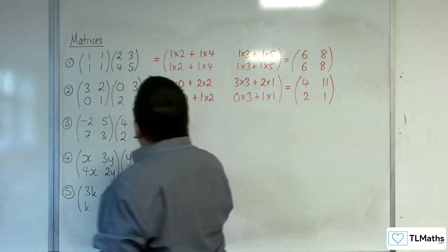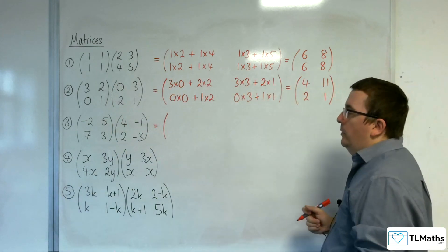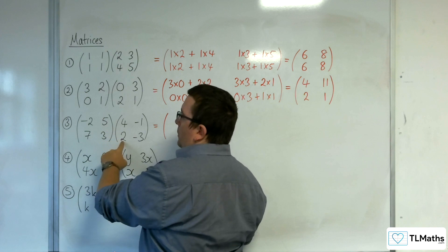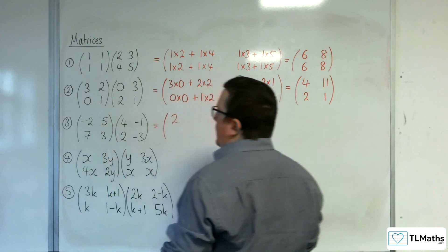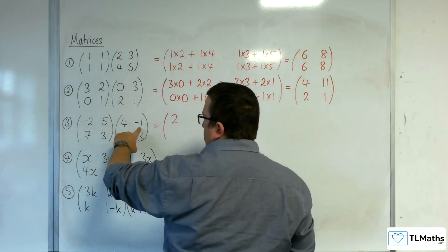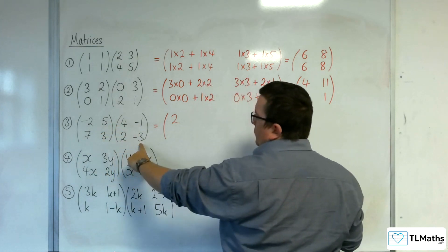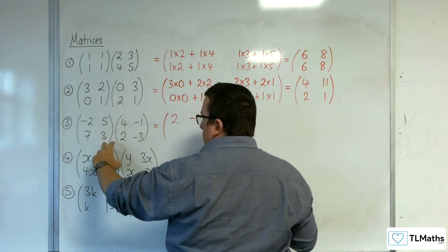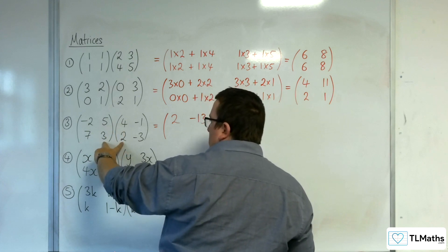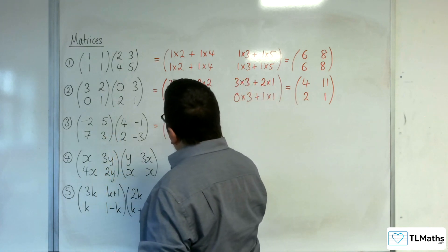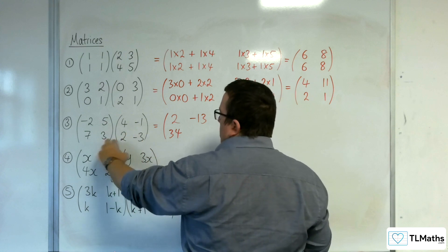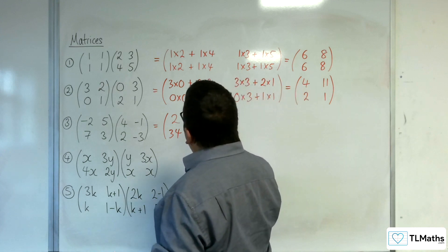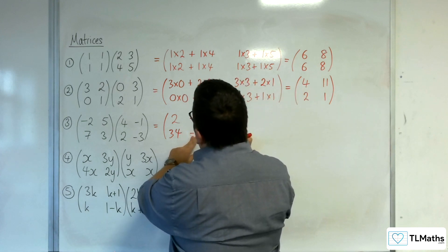Now let's try and do that without writing in that intermediate step. So we've got minus 2 times 4, so minus 8, plus 5 times 2 — so minus 8 plus 10 is 2. Then minus 2 times minus 1 is 2; 5 times minus 3 is minus 15, so we've got 2 take away 15, so minus 13. 7 times 4 is 28, plus 3 times 2 which is 6, so 34. Then 7 times minus 1 is minus 7, and 3 times minus 3 is minus 9, so minus 7 take away 9 gets us to minus 16. And so that is my matrix.